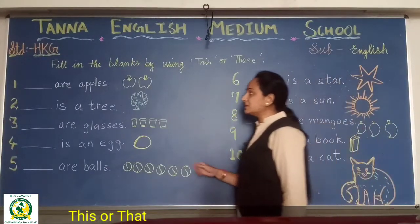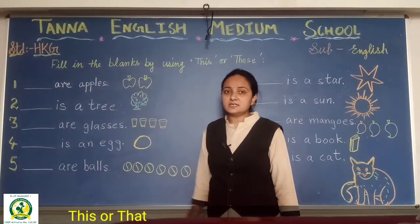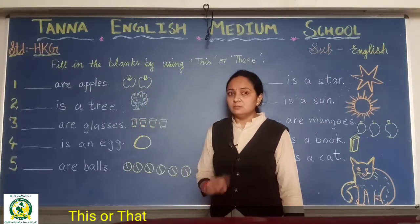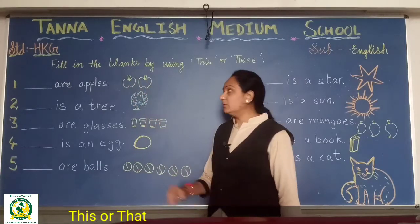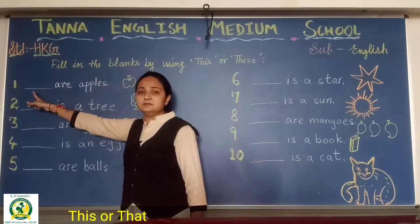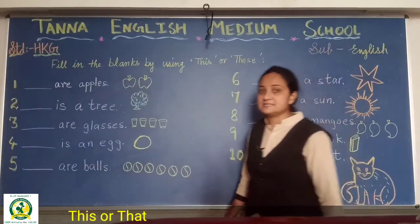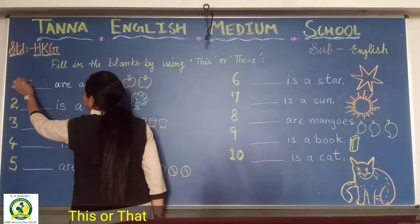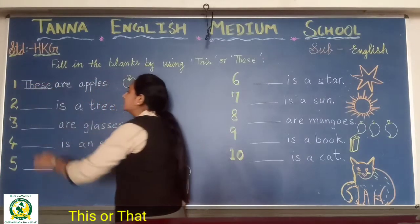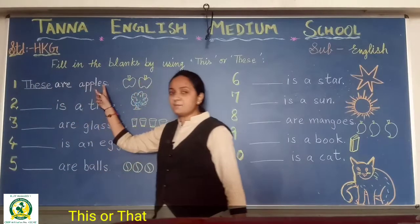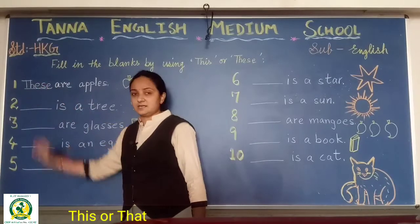Okay students, now see the first one. How many apples can you see here? One or two — meaning more than one apple. So when there is more than one, what will we use here — 'this' or 'these'? Yes, 'these'. So you have to write T-H-E-S-E. These are apples.